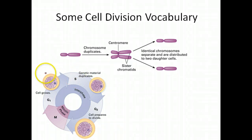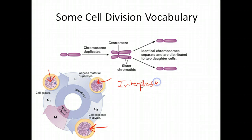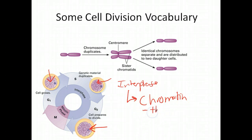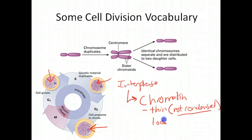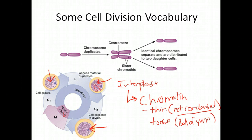The DNA at every point in interphase is characterized as chromatin. Chromatin is thin — not condensed. We talked about condensation of DNA occurring in the mitotic phase, so in interphase it's not condensed at all. It's very thin and very loose. You want to think of it as a ball of yarn because in the picture it's kind of all over the place.